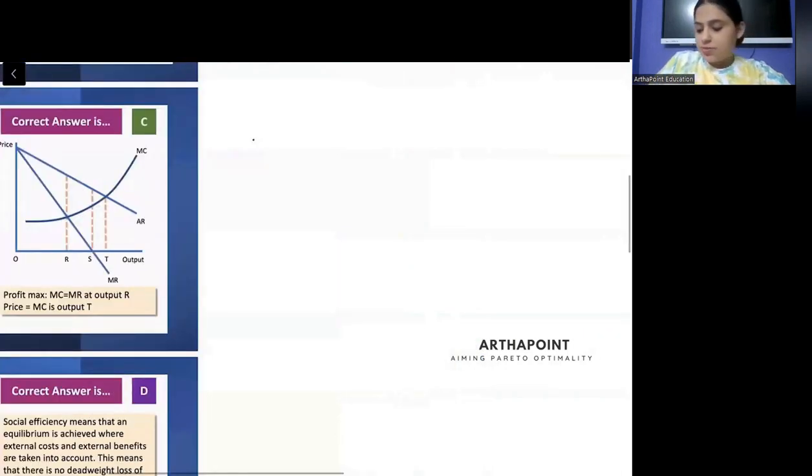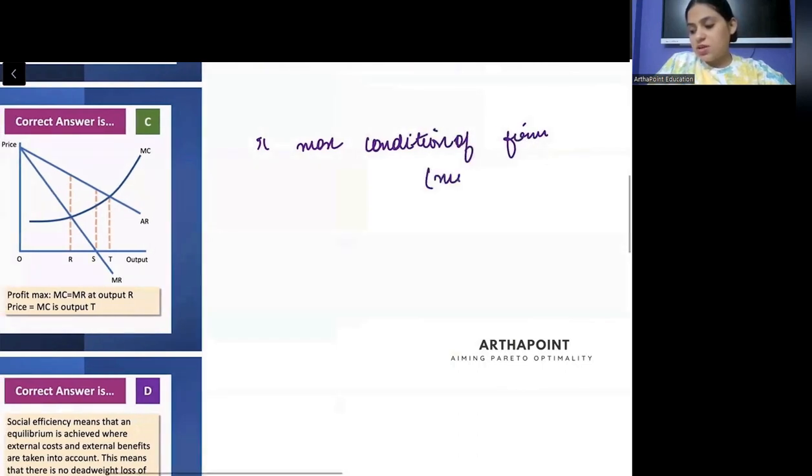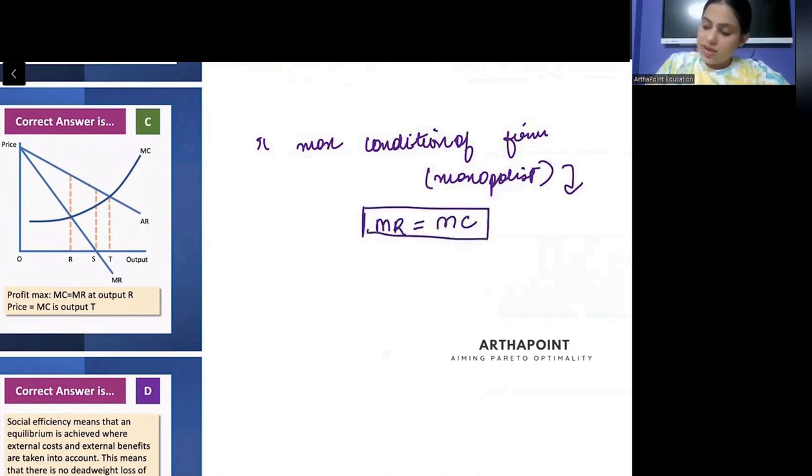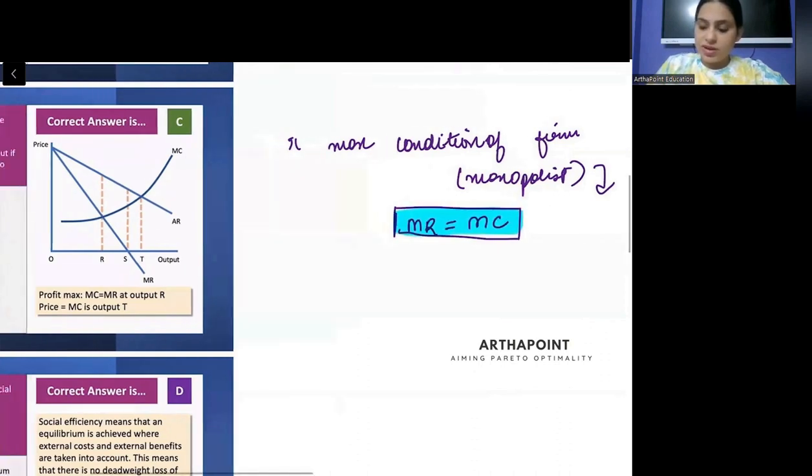It is saying what would be increase in output if you are asked to charge price equal to MC. But what is profit maximizing condition of firm? A monopolist's profit maximizing condition is MR is equal to MC. So MR equal to MC is achieved at R.